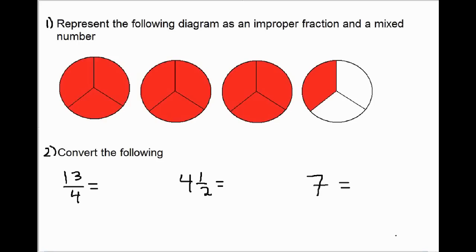To finish off our lesson on improper fractions and mixed numbers, I ask you to do a couple of things. The first question is to represent the following diagram both as an improper fraction and a mixed number, since we have more than a whole. For number 2, convert the following: the first one is an improper fraction — change it to a mixed number. The second one is a mixed number — change it to an improper fraction. And the last one is just a number — see if you can figure out how to write it as an improper fraction. If you're able to do that, congratulations — you now have a firm understanding of improper fractions and mixed numbers.